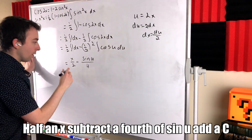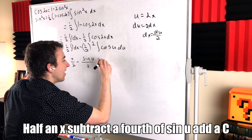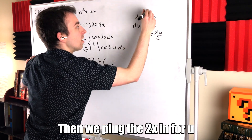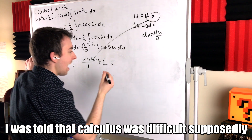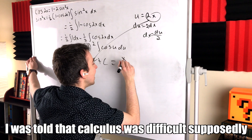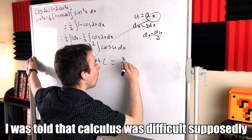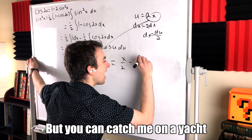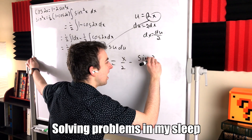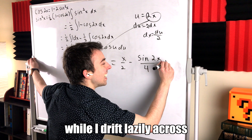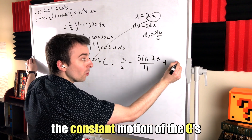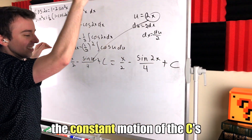That's half an x. Subtract the fourth to sine. You add a C. Then we plug the 2x in for u back where it's supposed to be. I was told the calculus was difficult, supposedly. But you can catch me in a yacht, solving problems in my sleep while I drift lazily across the constant motion of the C's. Yeah!